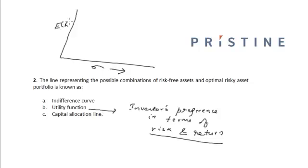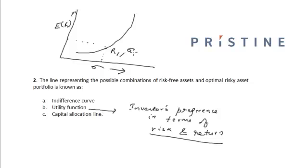For an individual, the indifference curve will look something like this. For a particular combination, let's say the investor is looking for return r1 at a risk of sigma1, and there is another point on the indifference curve represented by r2 and sigma2.